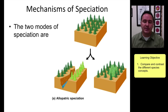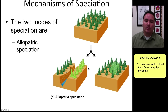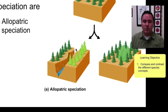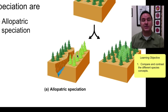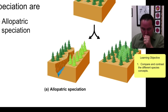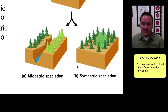Speciation happens by dividing populations into two separate populations with barriers placed between them. There are two main modes of speciation. The first is allopatric speciation, where a geographic barrier divides a population into two, and those two populations begin to evolve along their own independent evolutionary histories, diverging from each other.